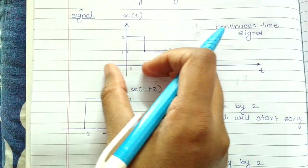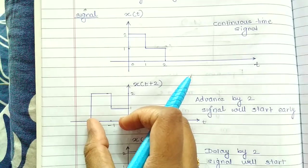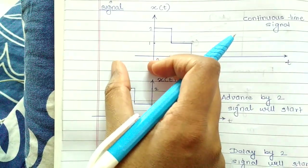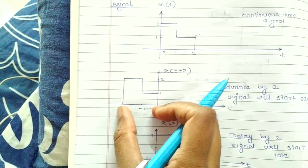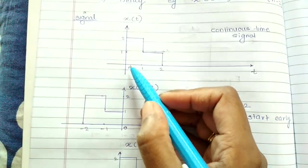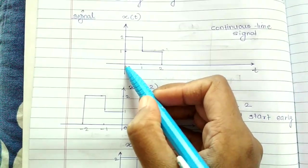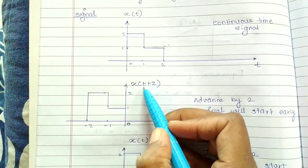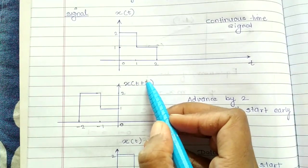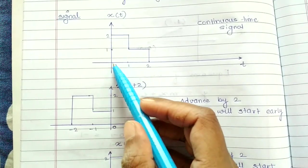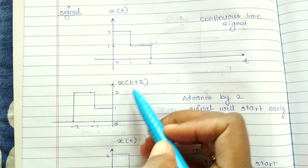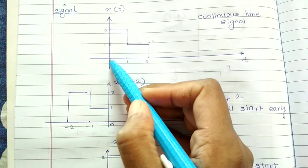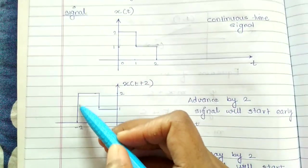The same signal has been shifted — the shape remains the same — by two units. The other way to see this is: whatever signal amplitude is present at zero should now be present at zero minus two. Remember it is a t+2 operation, but while drawing we plot the point at zero minus two. So at minus two, whatever signal strength is at zero will appear at minus two as it is.